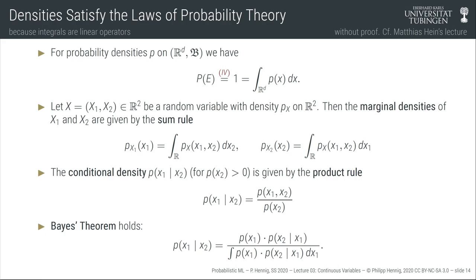Conditional densities have the same form: if we have a joint PDF over a bivariate random variable, the conditional distribution of one given the other — assuming the marginal density of the conditioning variable is non-zero — can be written as the joint divided by the marginal. PDFs essentially fulfill the sum rule and product rule; you replace all capital P's with lowercase p's and all sums with integrals. Since the sum and product rules hold, Bayes' theorem also applies to PDFs.